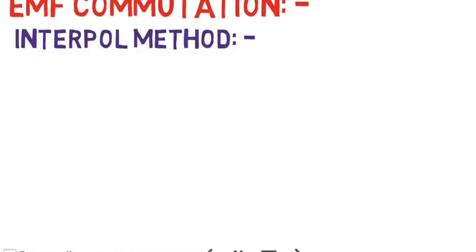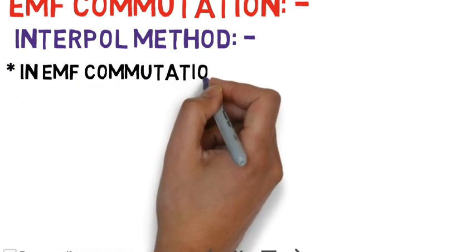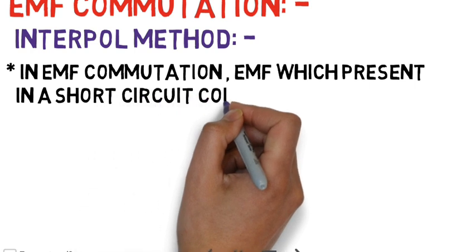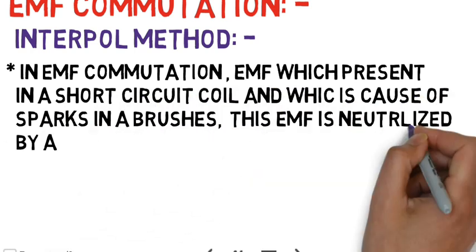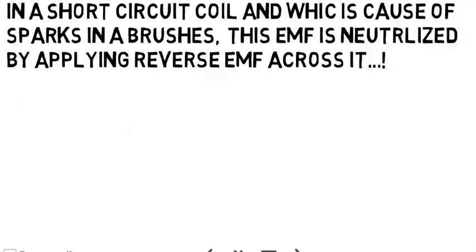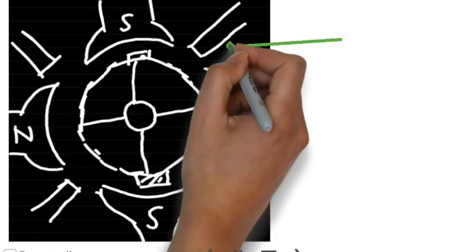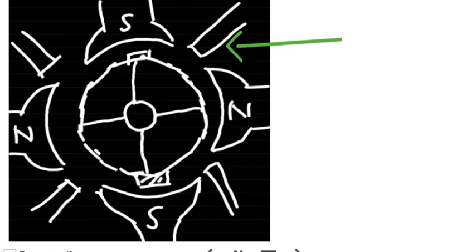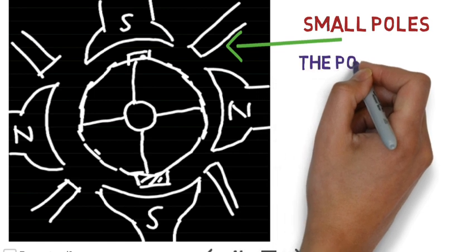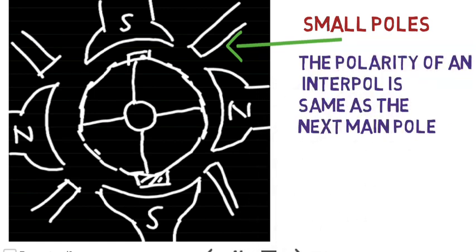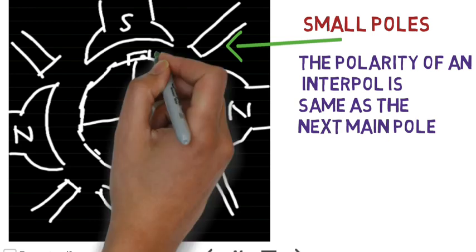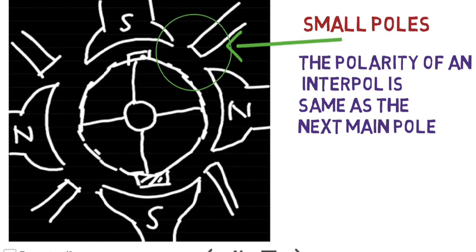The second method is EMF commutation, also called the interpole method. In this method, the EMF present in the short-circuit coil, which causes sparking at the brush, is neutralized by applying a reversal EMF across it. A small pole — called an interpole — is fixed to the yoke between the main poles, as shown in the figure. The polarity of the interpole is the same as the next main pole. The EMF produced by the interpole neutralizes the EMF present in the short-circuit coil, and hence sparking is eliminated.